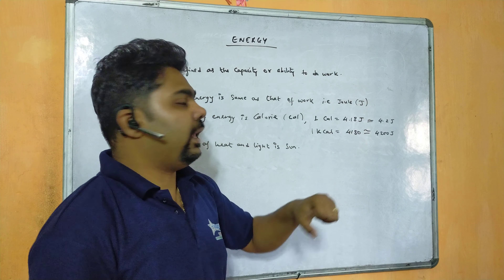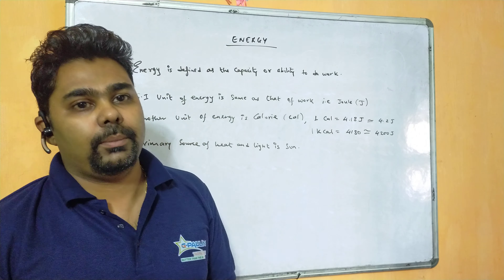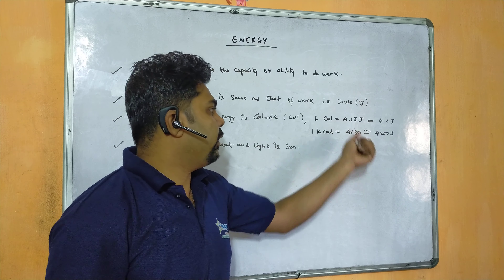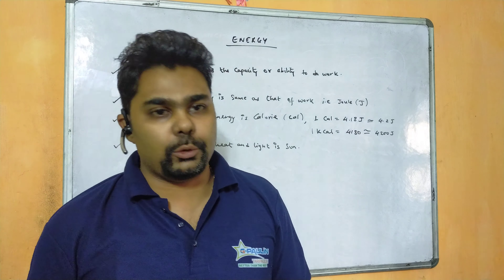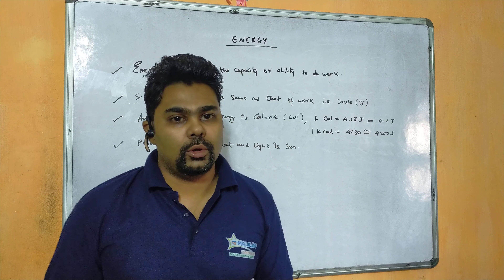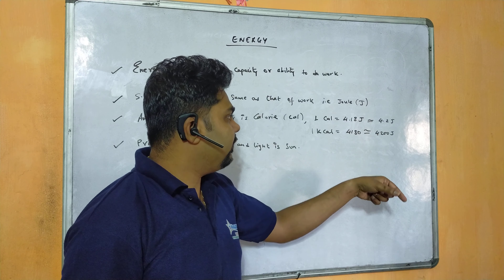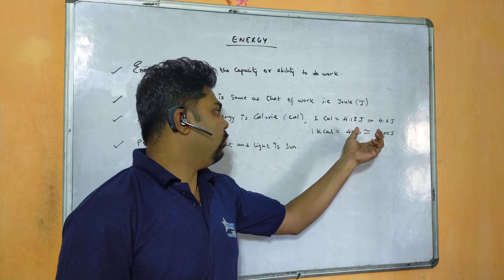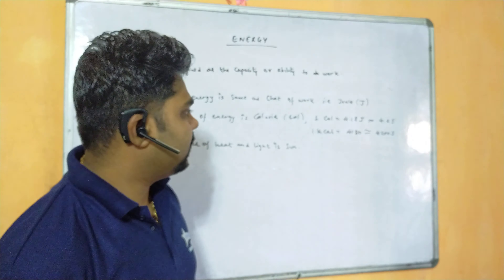Another unit of energy is the calorie. 1 calorie equals 4.18 Joules, which rounds to 4.2 Joules. Similarly, 1 kilocalorie (Kcal) equals 4180 Joules, or approximately 4200 Joules. Both values are acceptable.